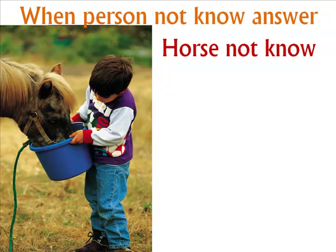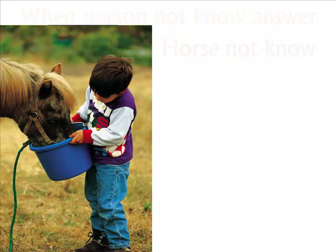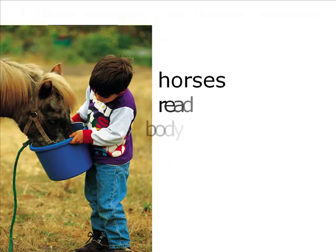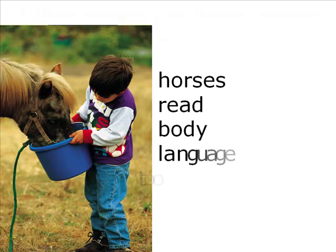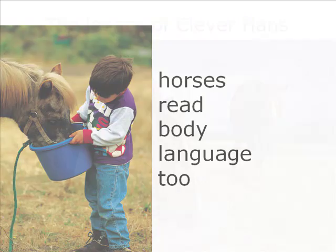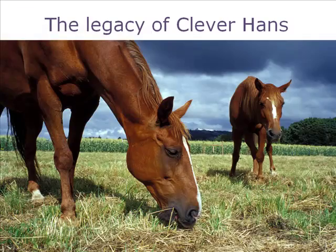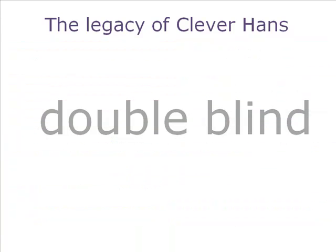Clever Hans was indeed clever. He could read the body language of people asking the question. When they took a pause, tilted their heads, or gave other cues, Hans stopped stomping his hoof. When there were no cues to read, Hans didn't know when to stop. Ever since Clever Hans, experimenters have tried to control for experimenter bias. This is the principle behind the double blind study.